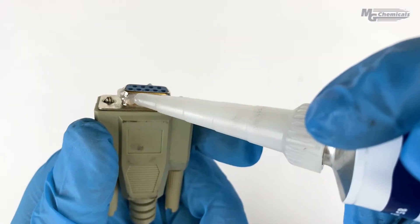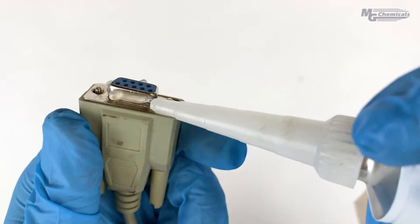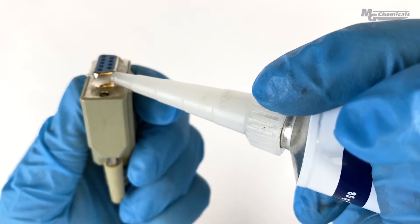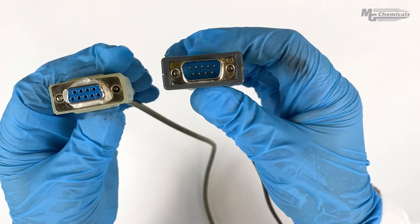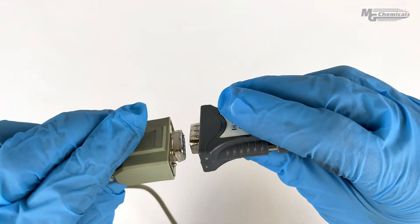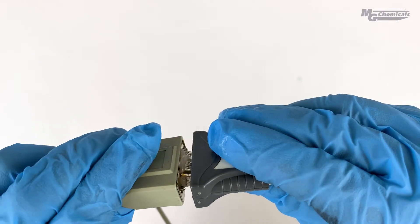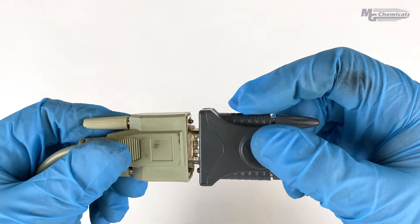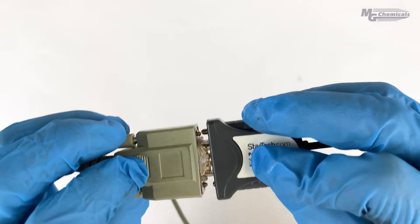Our last example shows how the dielectric grease seals around plugs. We're showing a nine pin connector, but you can use it around any plug. Many of our customers use dielectric grease to seal around plugs on marine docks to keep water out and prevent the pins from rusting.